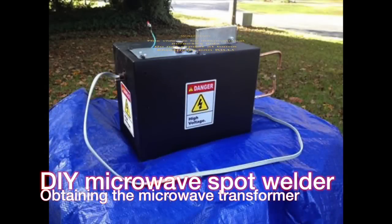In this video I'm going to show you how I extracted the big transformer from the microwave oven and repurpose it for use as a spot welder. I'll show you how I disassembled the transformer and rewired it to give a low voltage and a high current. Then I'll put it back together again.